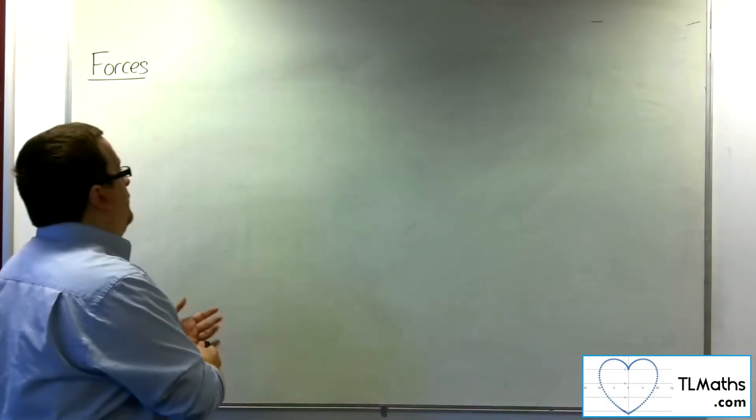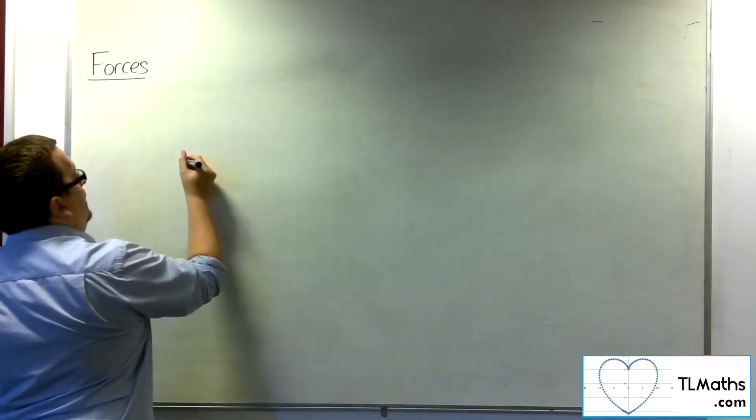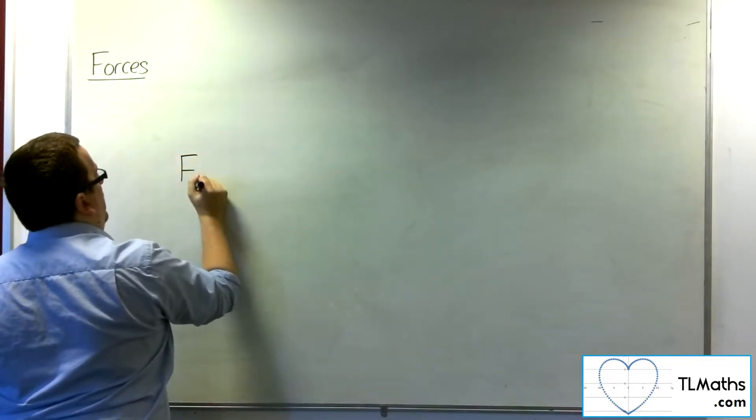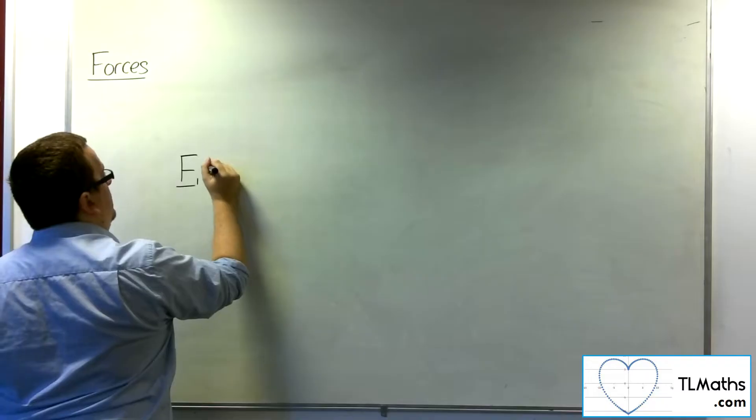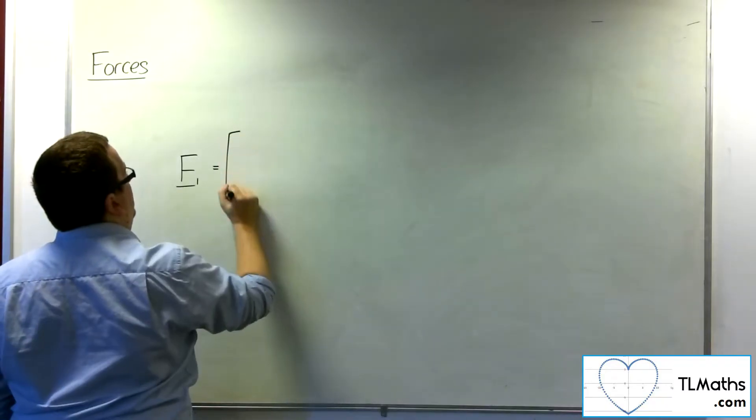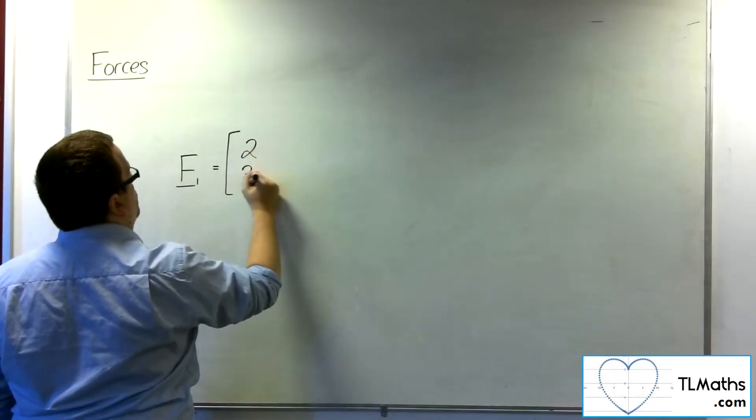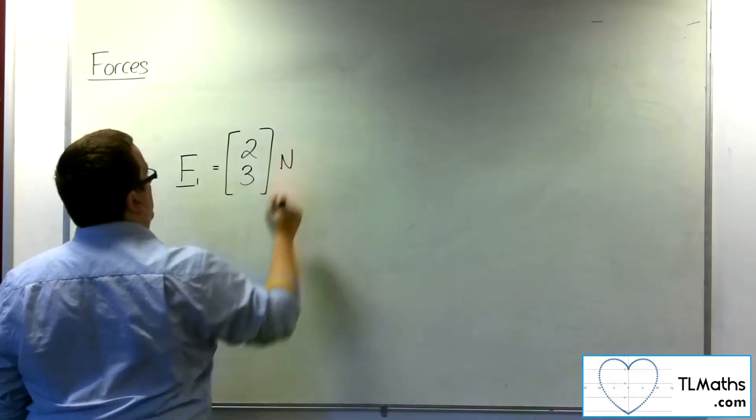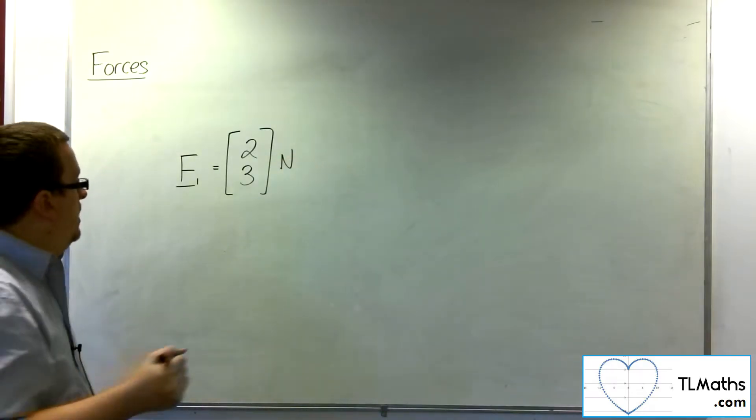So if you have two forces, let's say we have force 1, and it's a vector, so I'll underline it, which can be written as, let's say, 2, 3 newtons. There is force number 1.